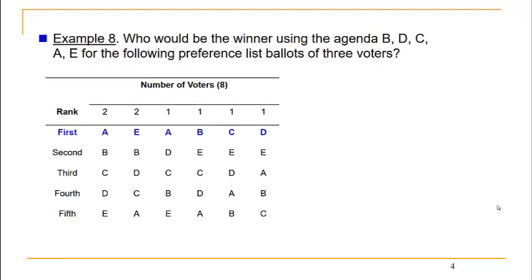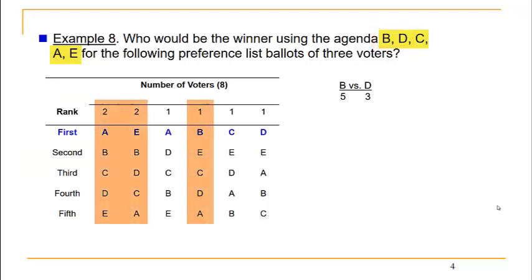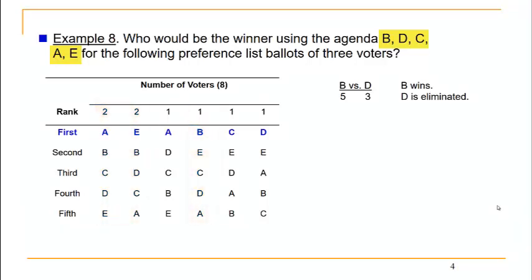In the second example, we have eight voters choosing between five candidates A through E, using the agenda B, D, C, A, E. The first head-to-head matchup is candidate B versus candidate D. Looking at the preference lists, there are five voters who prefer B and three who prefer D, so B wins and candidate D is eliminated.